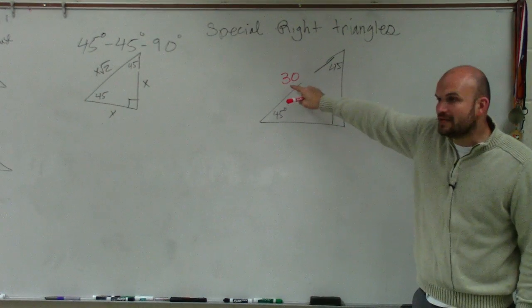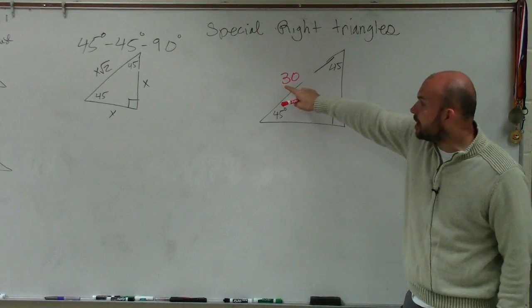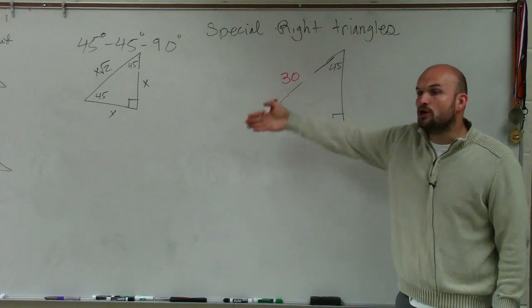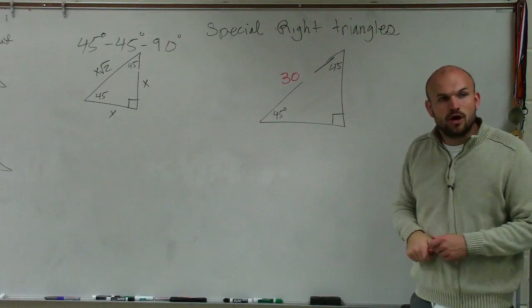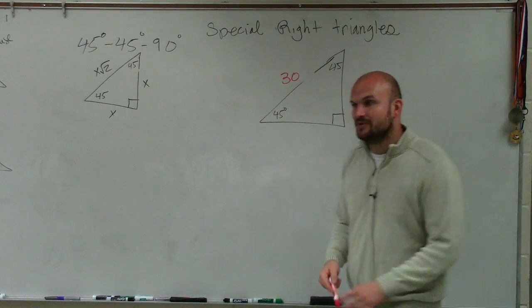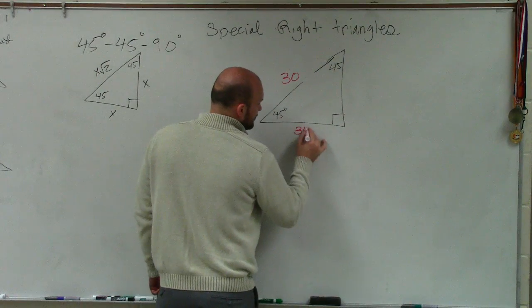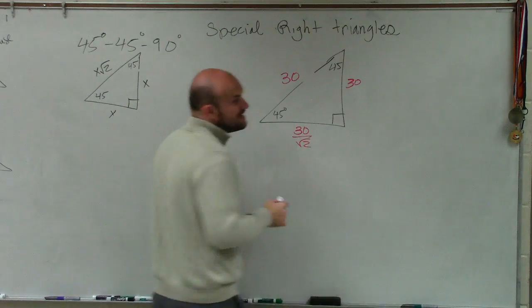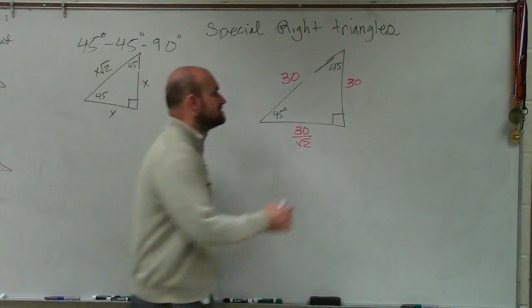So here, I'm giving you the hypotenuse. This is already your value. So if I want to go backwards and find the legs, what do you think I'm going to want to do? Divide. Divide by the square root of 30. Or the square root of 2. And then since I know these two legs are exactly the same.